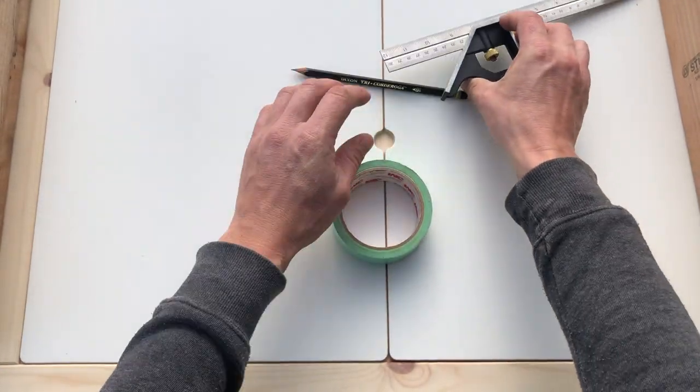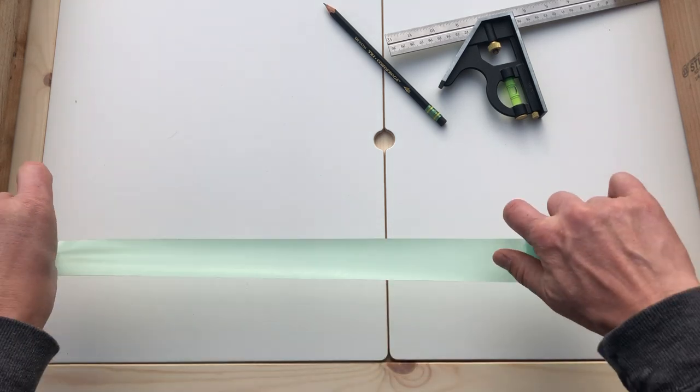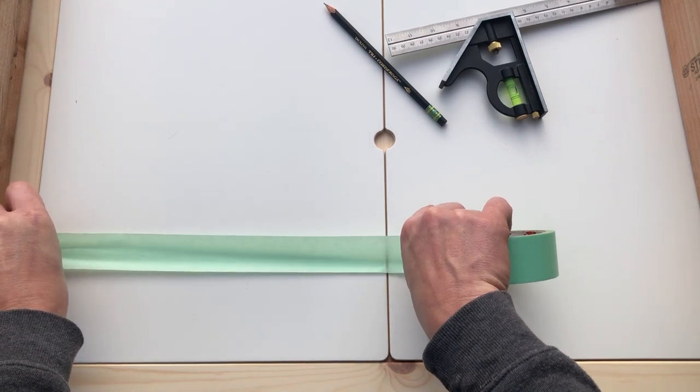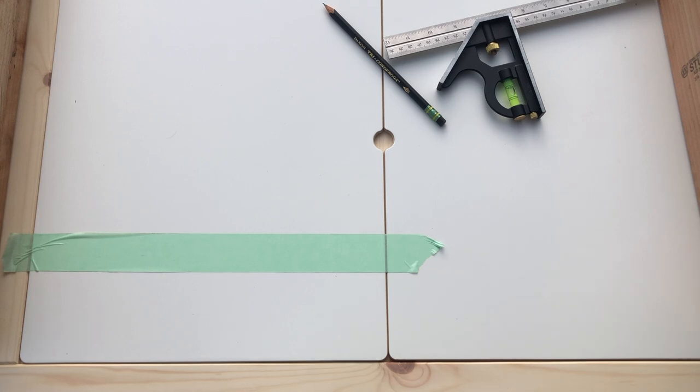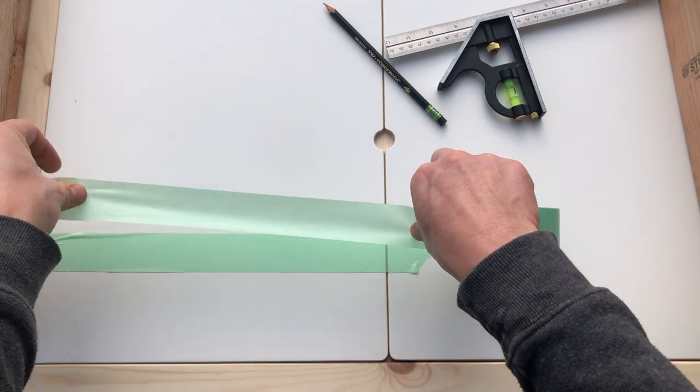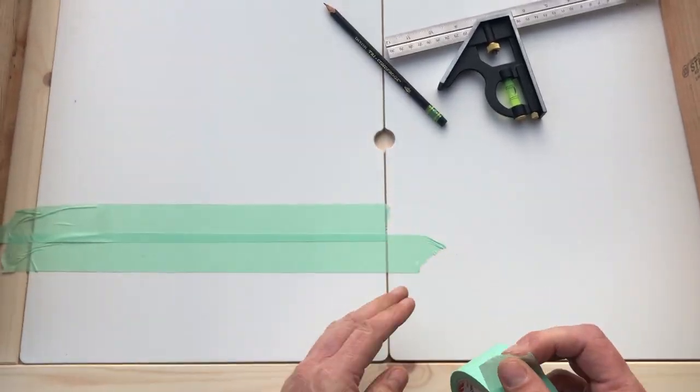Now to avoid leaving marks or anything like that, I'm going to place a layer of masking tape over my board. This will also help when you're drilling to avoid splintering the wood.